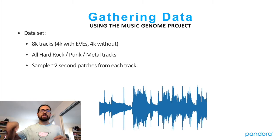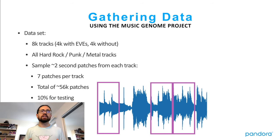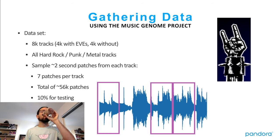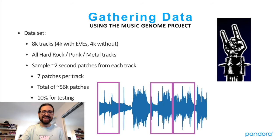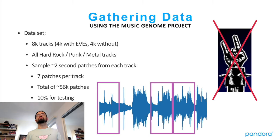From each track I sample two-second patches — seven patches per track — giving roughly 56,000 patches total. Ten percent are used for testing, and 90% for training the neural network. Positive examples include various growls and screams; negative examples include punk and other hard rock with no extreme vocal effects — the instrumentation is similar, but there are no EVEs.